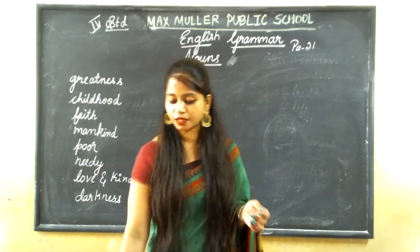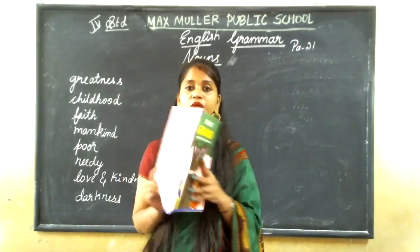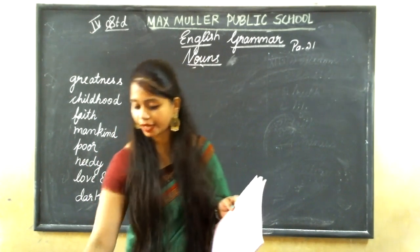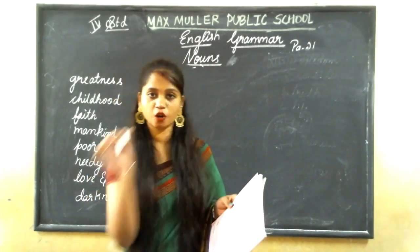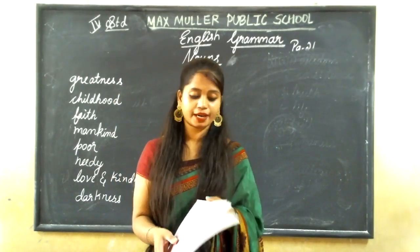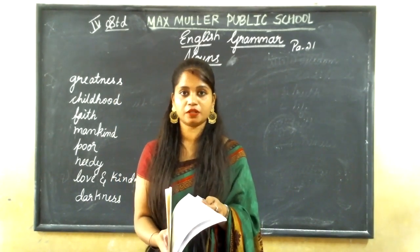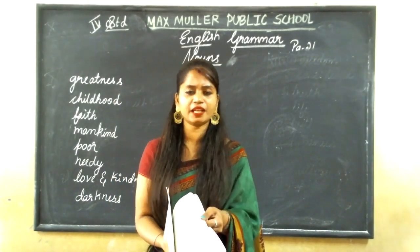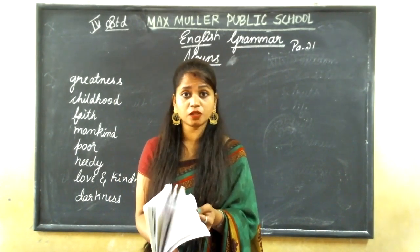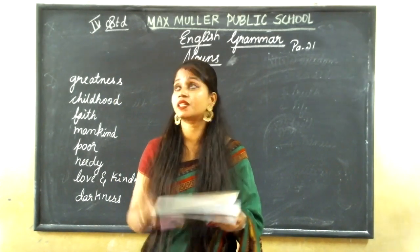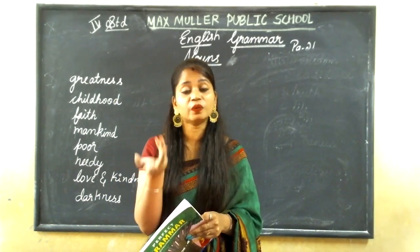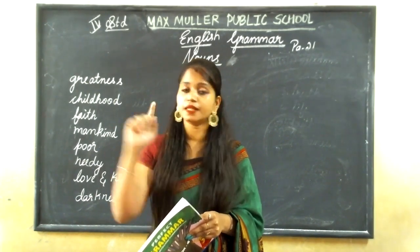For example, you can count books and chalks — those are countable. But if there are many papers, we can't count them — uncountable. Stars — we can't count them. Sun and moon — only one, we can count. Water, sugar, rice — we cannot count these.